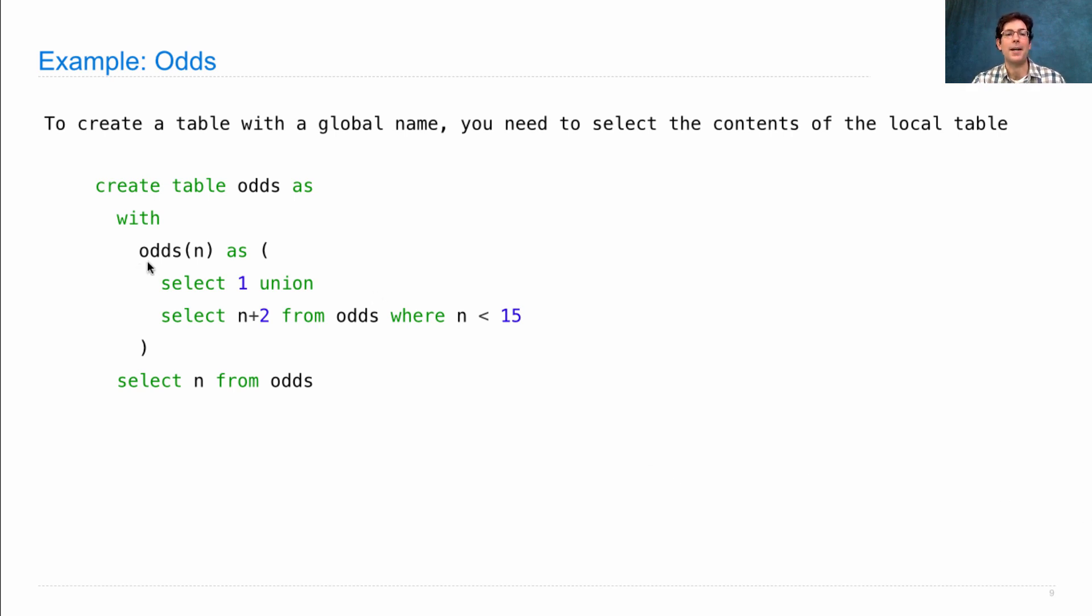So let's say I want odd numbers. That's 1 and n plus 2 from every n in odds, where here we have a limit to the number of odd numbers we'll select by saying that n is less than 15. Now why do we know the column is named n? It's because of this. This declares the name of the local table and the column, so we don't have to say what the columns are named within these select statements. And we can use n from odds.